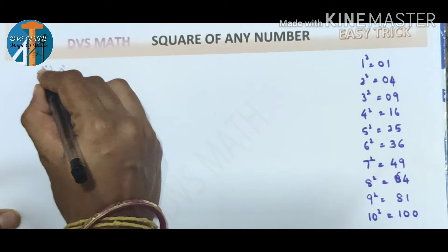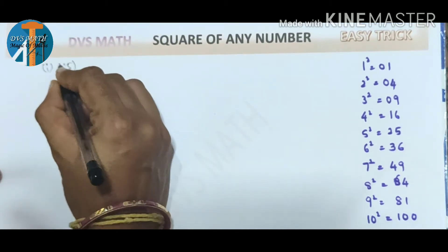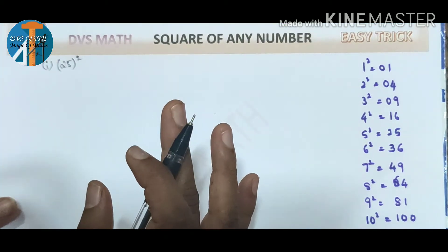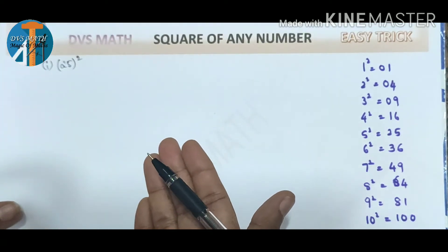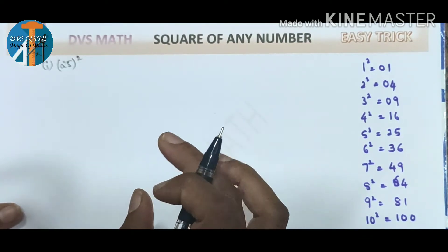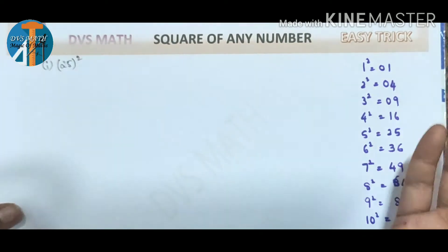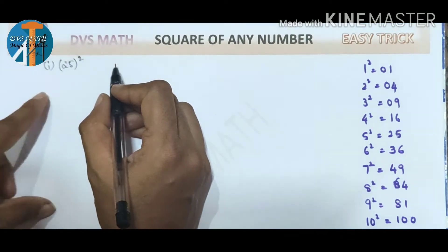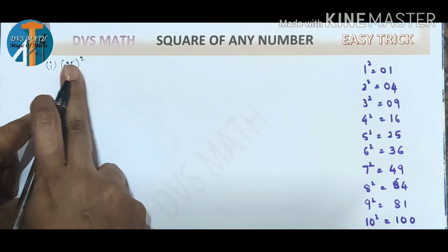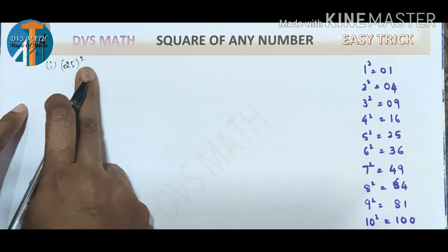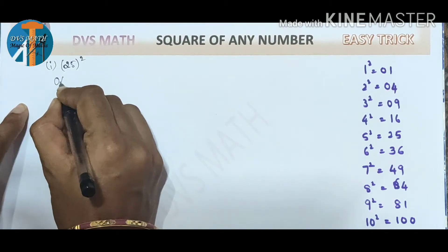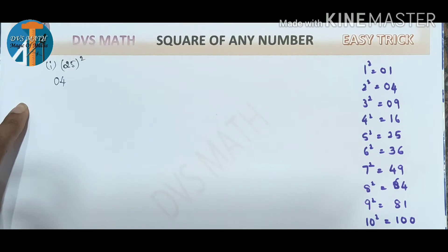I am going to use the first example. I will show you the number 25 squared. When I use 25 squared, we take the digits: 2 and 5. So 2 squared raised gives 4 — that's 0,4.